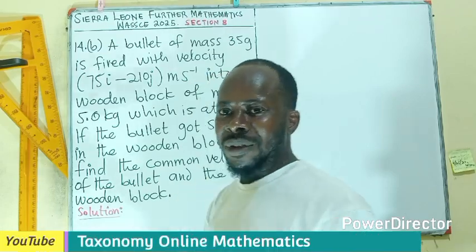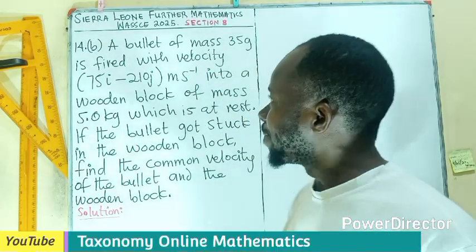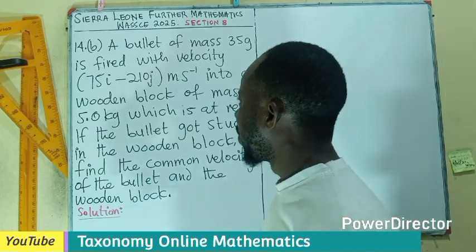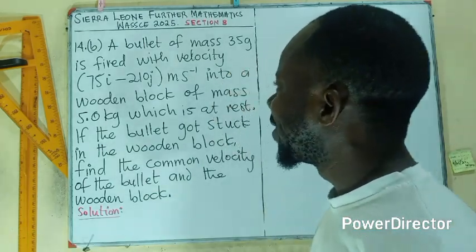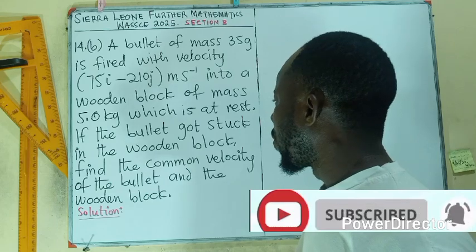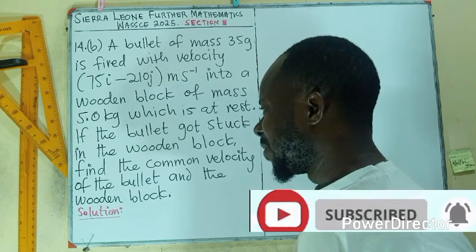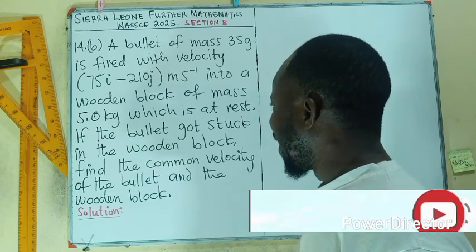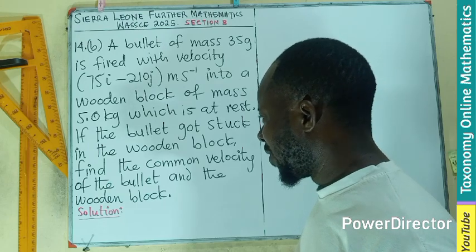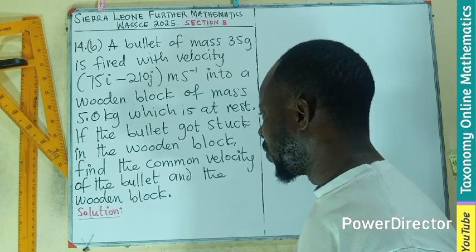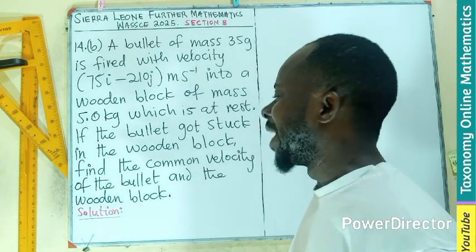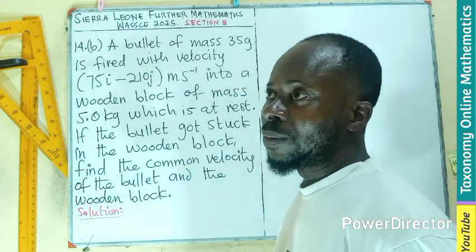Welcome to question 14B. A bullet of mass 35 grams is fired with velocity 75i minus 10j meters per second into a wooden block of mass 5 kg which is at rest. If the bullet got stuck in the wooden block, find the common velocity of the bullet and that of the wooden block.